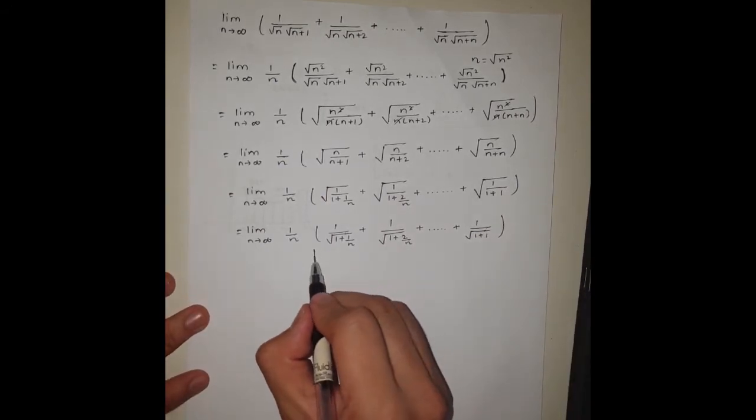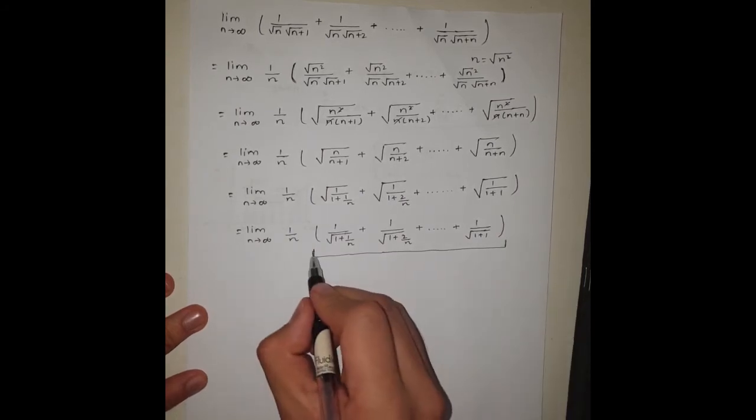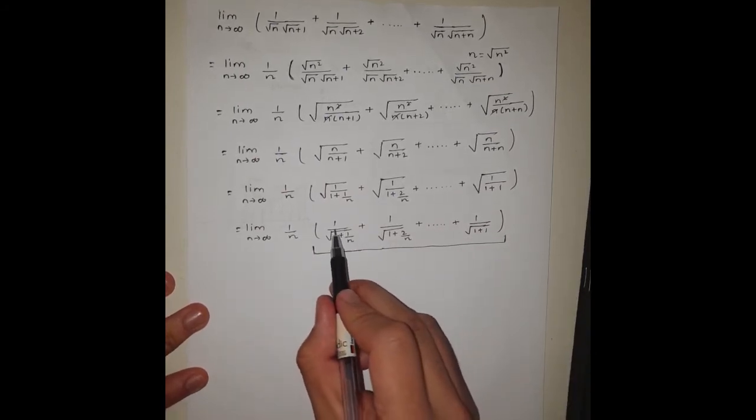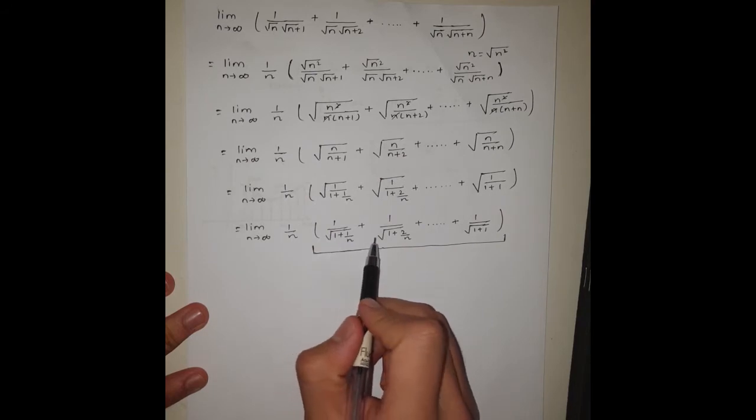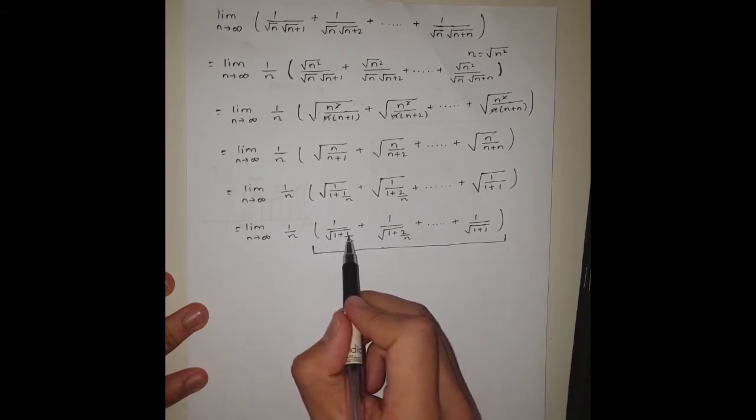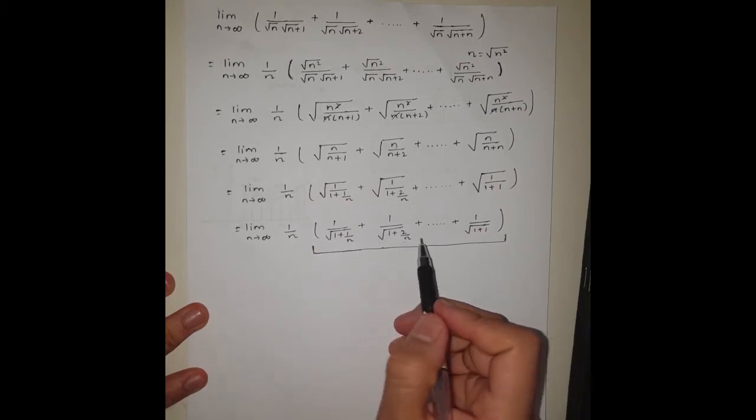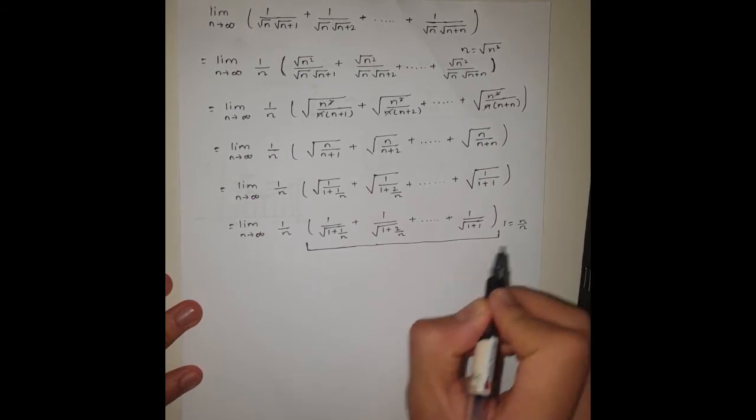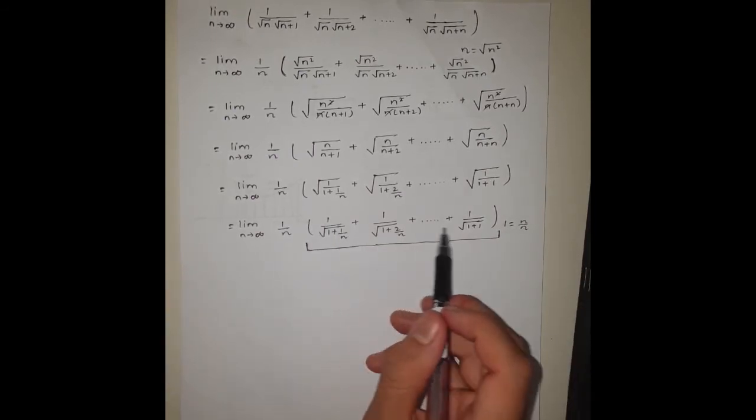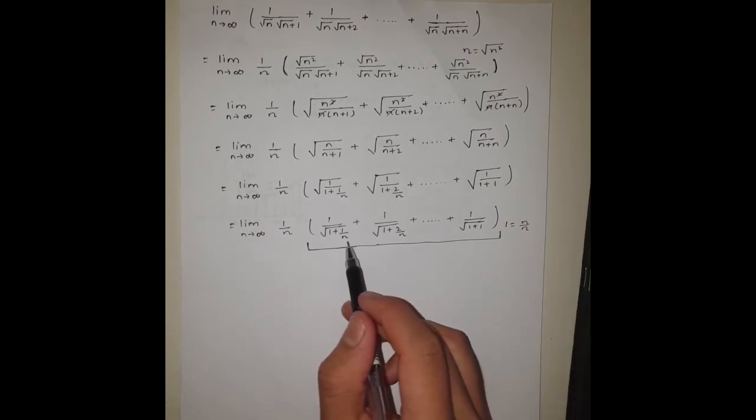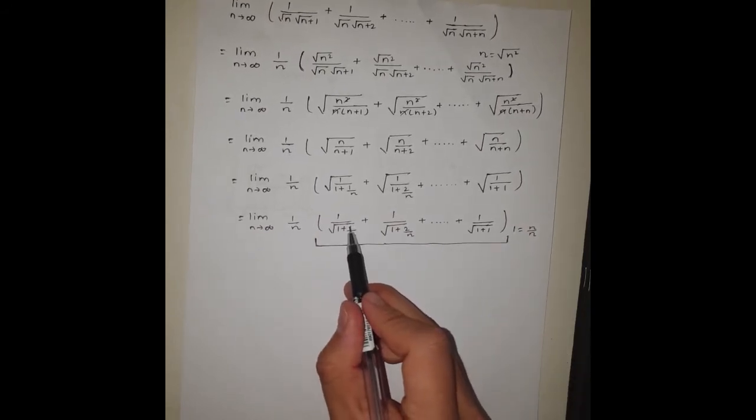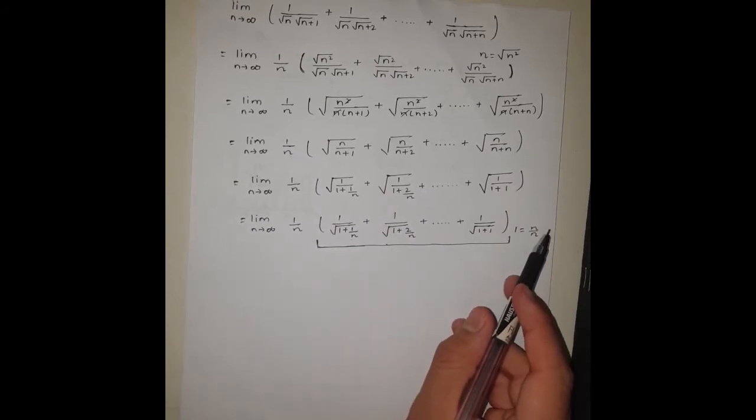Here we can see the summation, the sum of all these terms forms a series. We can see from here the numerator is the same, it's always one, but one thing is changing in the denominator. It's this part here: the first term has 1/n, second term has 2/n, and the nth term has n/n, which is one. So the denominator is changing. The most important thing here is the n remains the same everywhere, but the upper part, the numerator of this part is changing, going from 1 to n. So we can say this is a series.